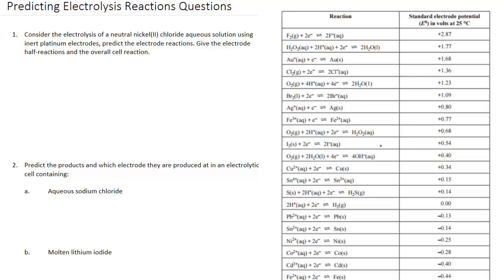In this tutorial we're going to look at predicting electrolysis reactions and working through various practice questions. The first question asks us to consider the electrolysis of a neutral nickel chloride aqueous solution using inert platinum electrodes. We need to predict the electrode reactions and give the electrode half equations and the overall cell reaction.